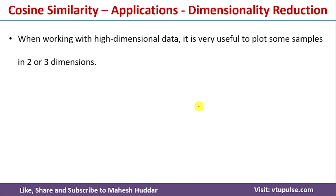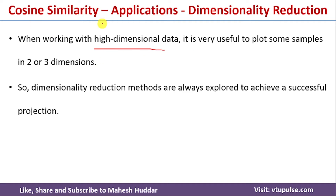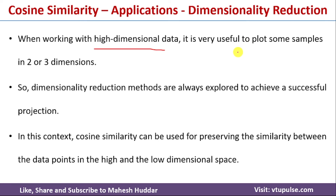The last application is dimensionality reduction. Whenever we work with high-dimensional data, it is difficult to interpret or plot that data. We need to reduce the dimensionality to two or three dimensions for visualization. We find the cosine similarity between the dimensions of the dataset, and if two features are similar with one another, we consider only one of them, thereby reducing the dimensionality of the given dataset.